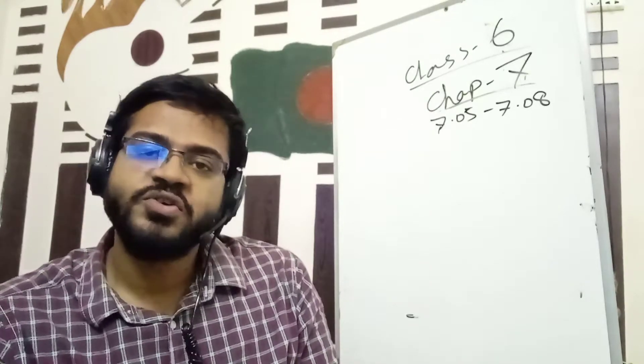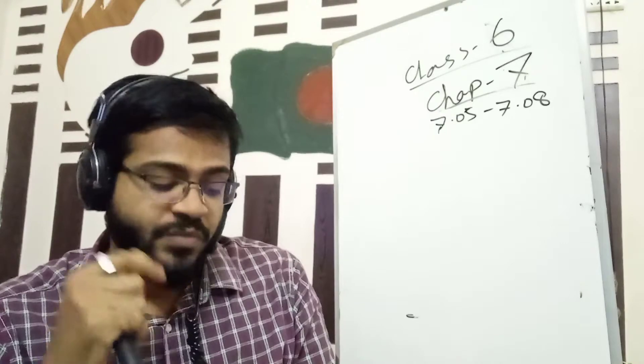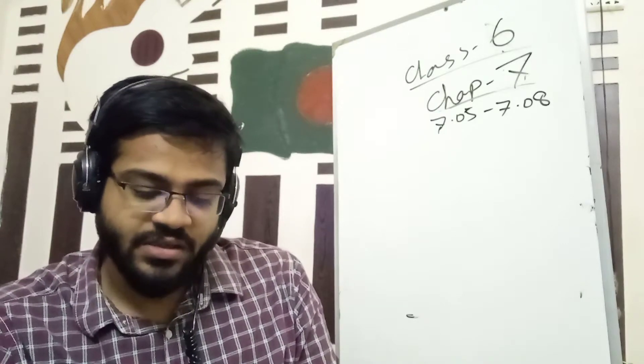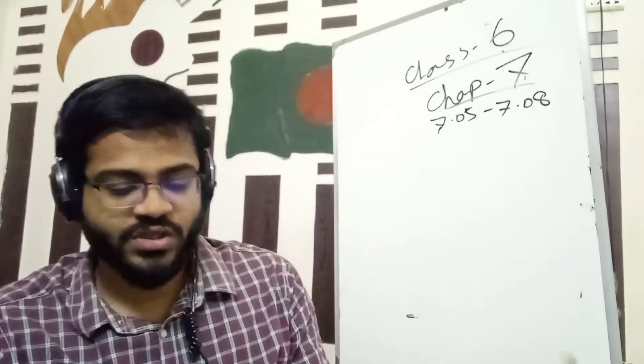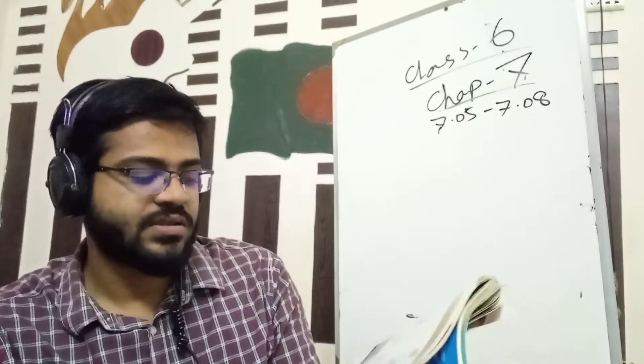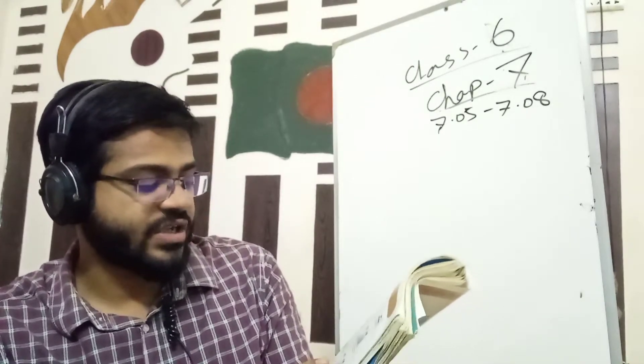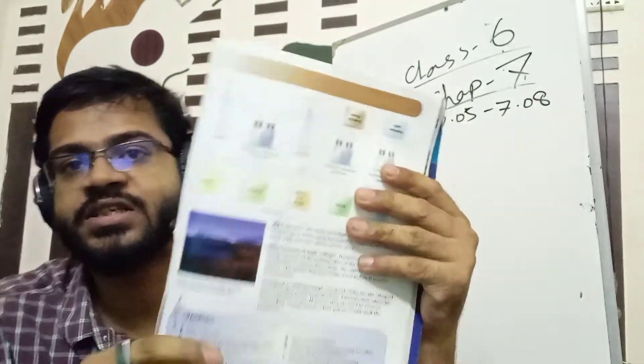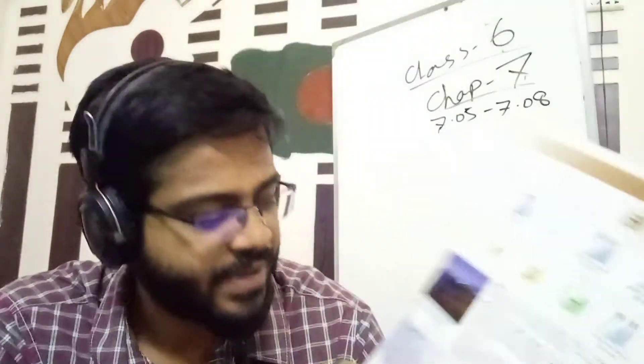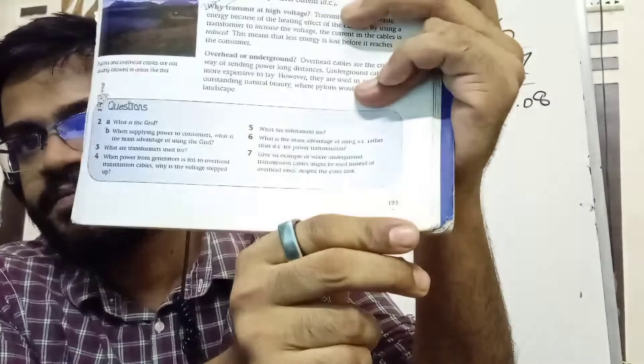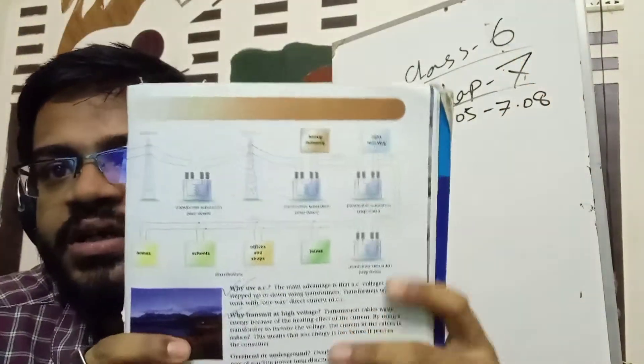Then, the unit is 7.08. Why use AC? That means alternating current. Why transmit at high voltage? Page 193. That is the question.